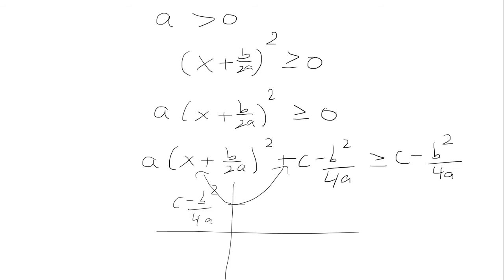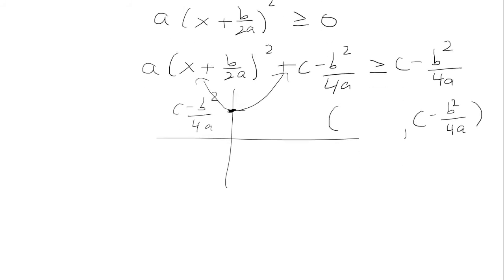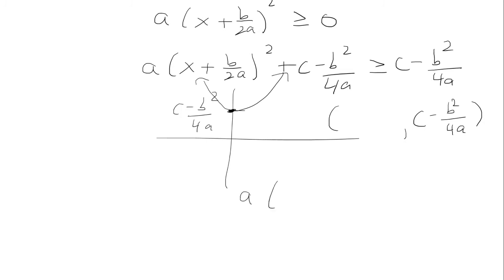Well, clearly, that's a minimum. So, well, where's the minimum? Well, what we have here is the y value is c minus b squared over 4a. Well, what's the x value? So here I'm going to rewrite it.